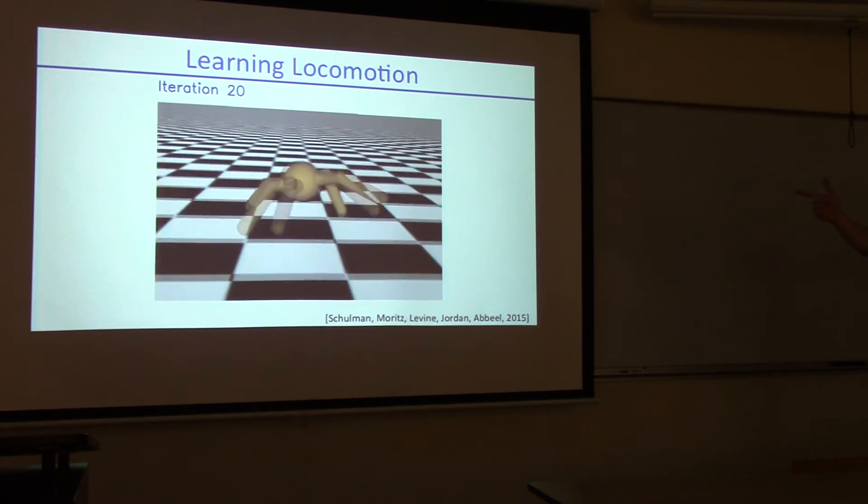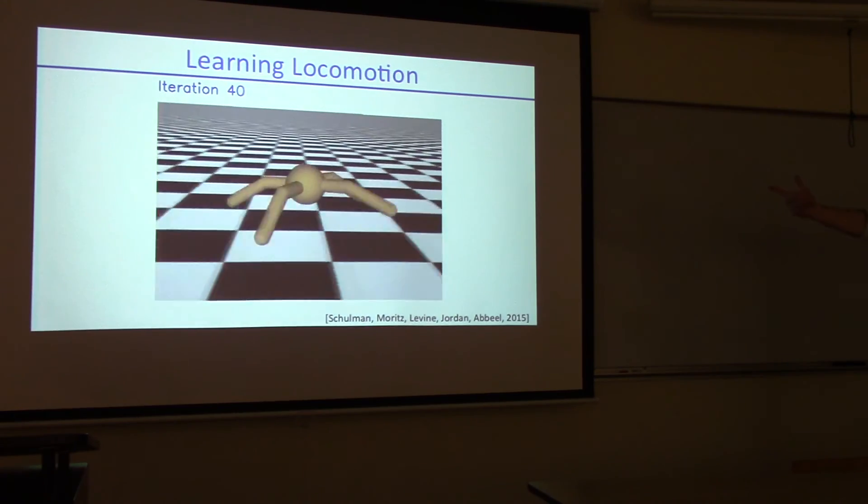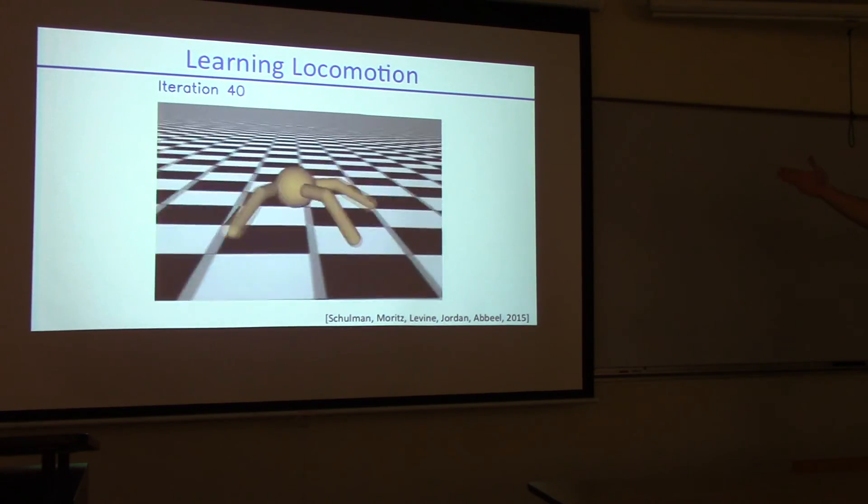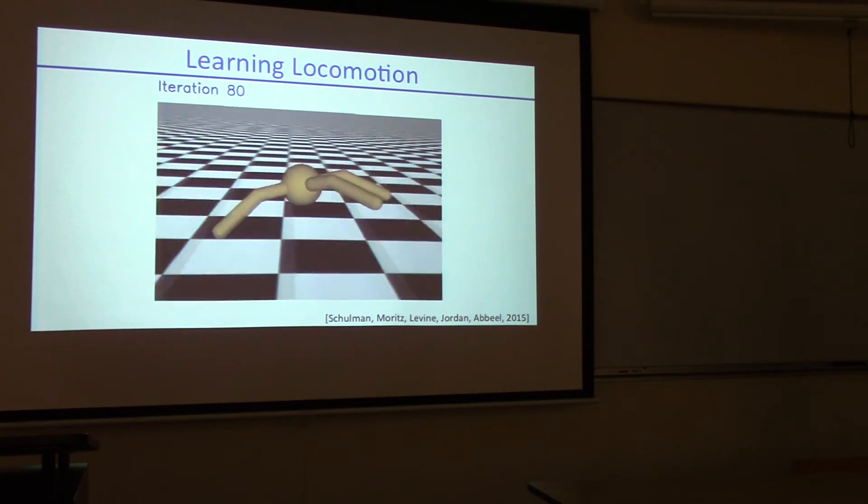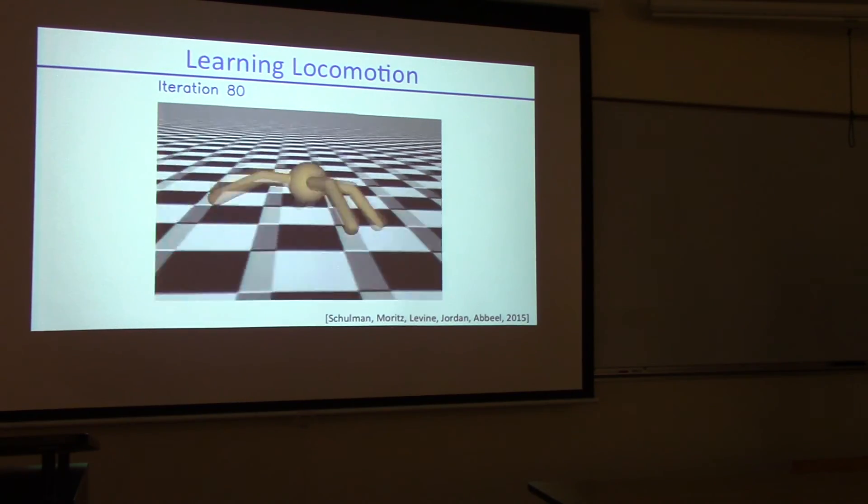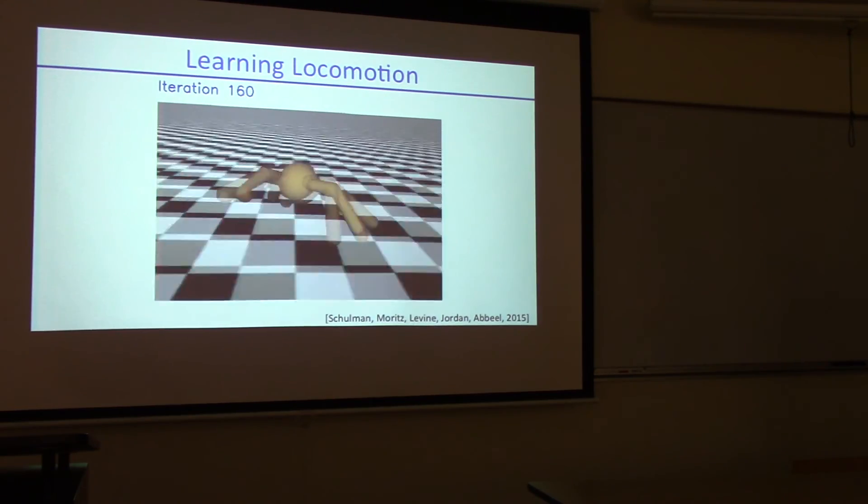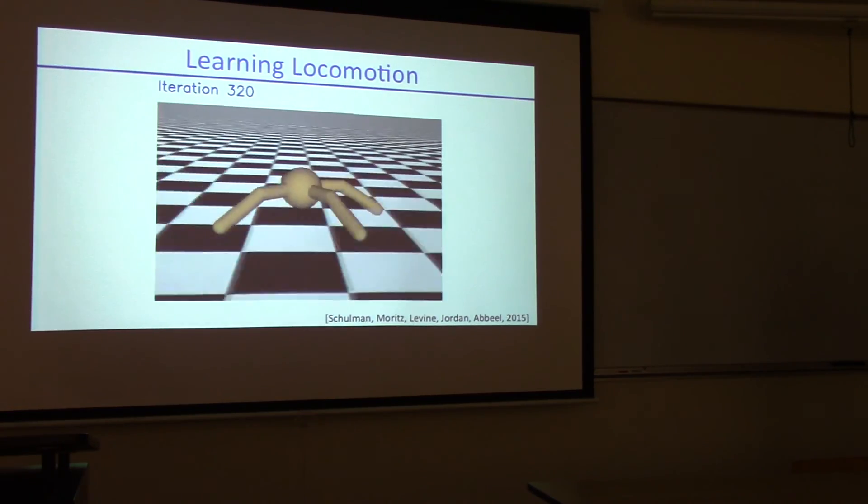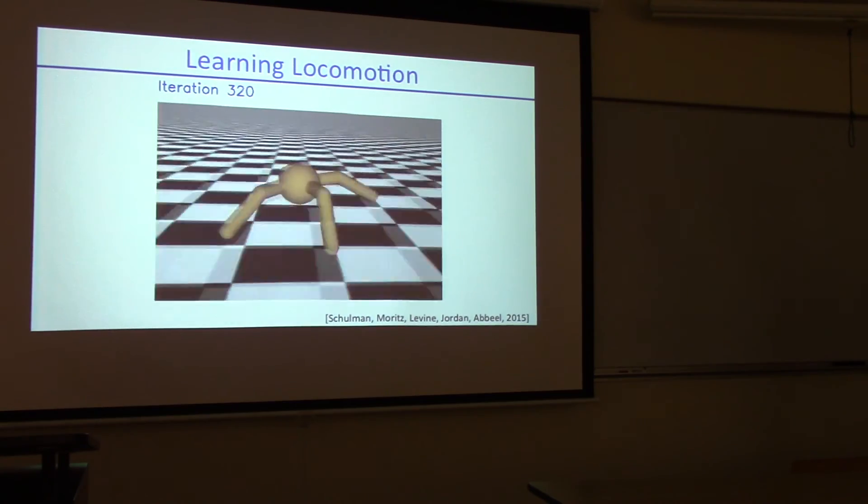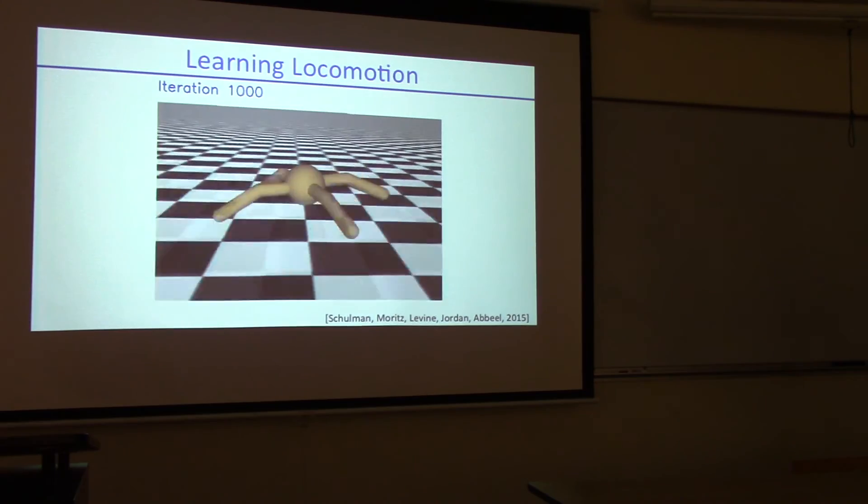You can run the exact same piece of code, but now have it control this four-legged robot. No reprogramming needed, just interface it with this robot instead of the other robot. And here it goes, and it learns to run with this robot. In fact, for this one, it learns to run very fast. Faster than probably is physically possible, but the simulator allows it. So it figures out it gets very high reward in the simulator by speeding up so much.